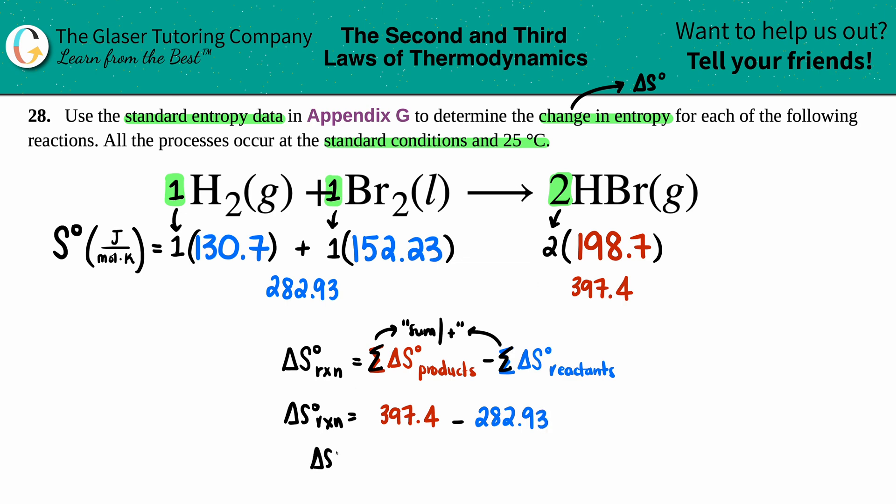And delta S for the whole entire reaction is, seems like it's going to be a positive number. 397.4 minus 282.93—for sig fig purposes you should only have one sig fig after the decimal because we're subtracting here—so it'd be 114.5. And that unit is the same unit as your S values in the back of the book, which are joules per mole times kelvin.